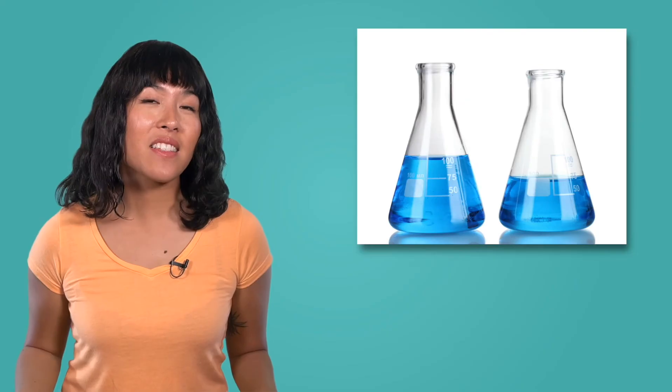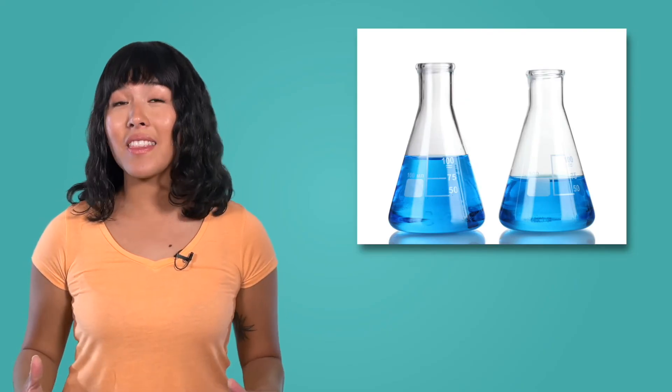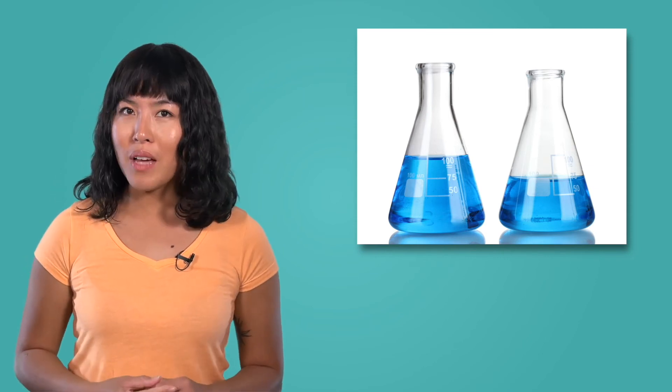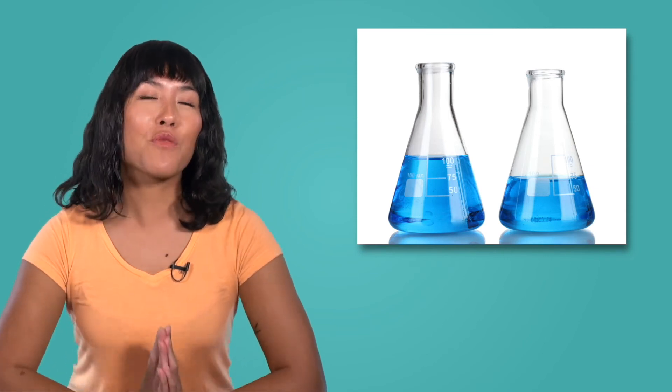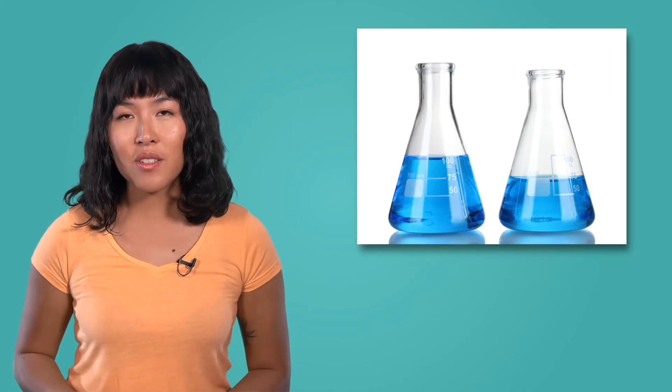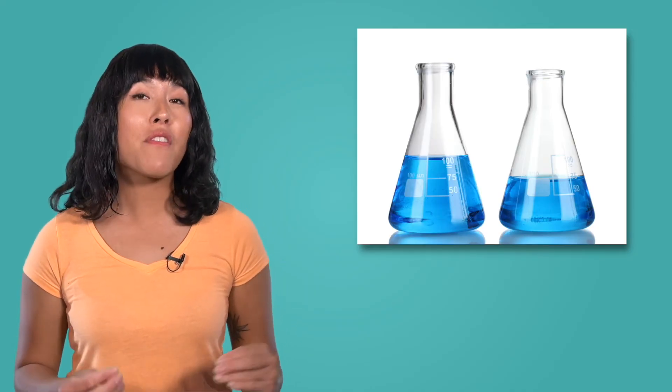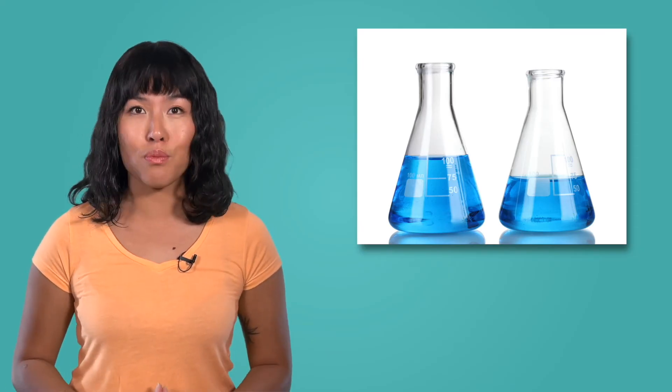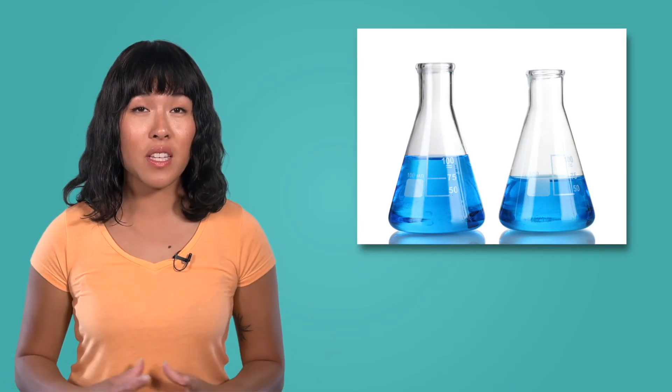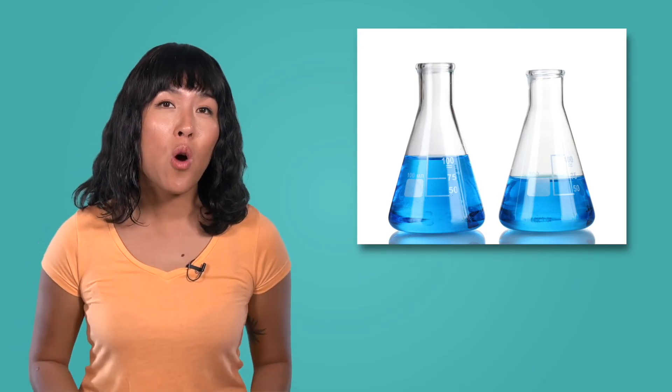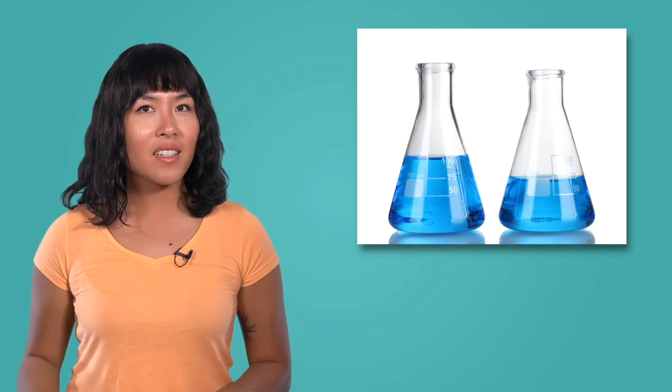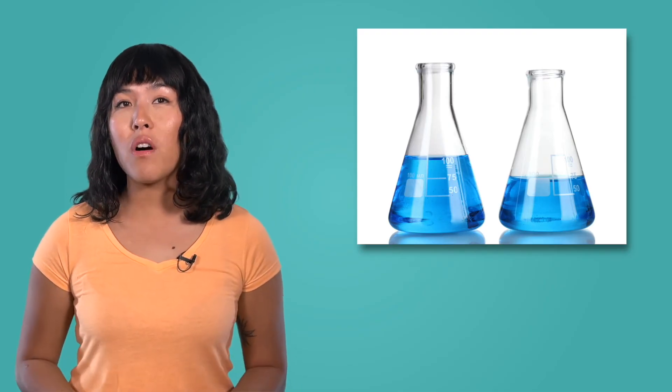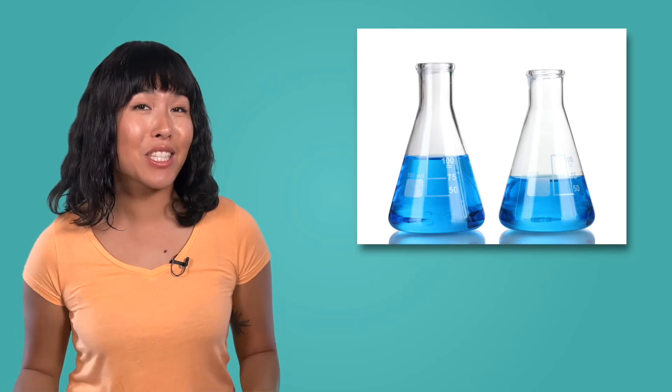These two flasks contain the same exact liquid. Looking at them, we can determine two physical properties, color, blue, and volume. The flask on the left has a volume of 100 milliliters, and the one on the right has a volume of 75 milliliters. Even though both color and volume are physical properties, when the amount of the substance changed, the color stayed the same while the volume did not.